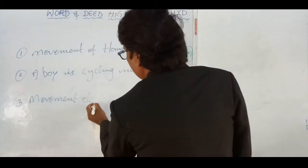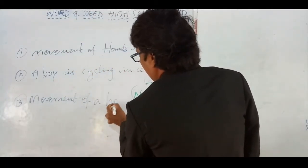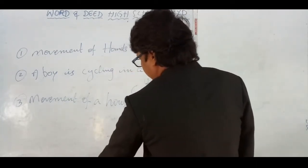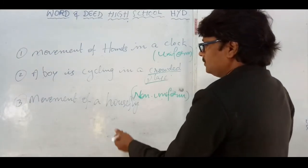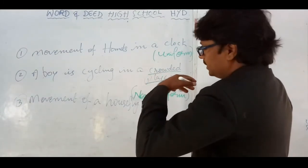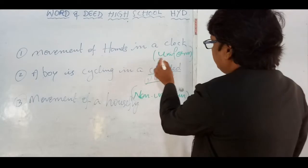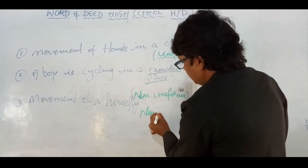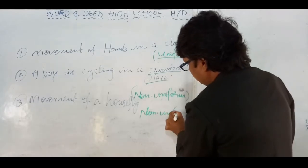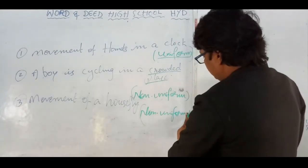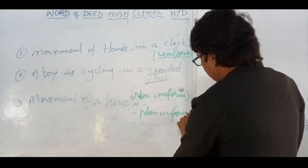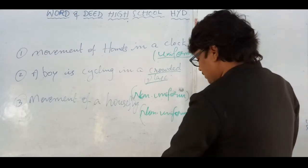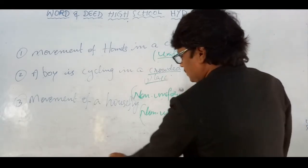Third statement: movement of a house fly. What will be the movement of a house fly? A house fly does not move in uniform motion — it moves in non-uniform motion.